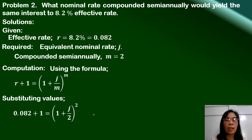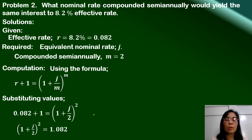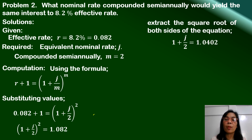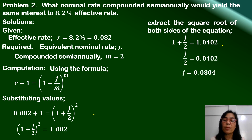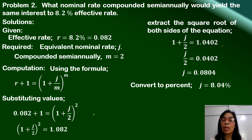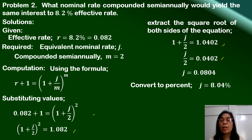Simplifying algebraically, we rewrite as (1 plus J over 2) squared equals 1.082. Extracting the square root of both sides: 1 plus J over 2 equals 1.0402. Therefore, J over 2 equals 0.0402, and J equals 0.0804. Converting to percent, the nominal rate is 8.04%. Note that you don't need the detailed steps if you input the equation directly into your calculator — it will give you J equals 0.0804.